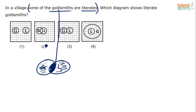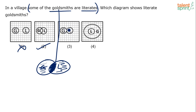The diagram that correctly represents this is option two. Option one has no overlapping between goldsmiths and literates, showing that no goldsmith is literate — which is wrong. Option three shows the circles just touching externally, which is essentially the same as option one, and also shows no goldsmith is a literate. So that is also wrong.